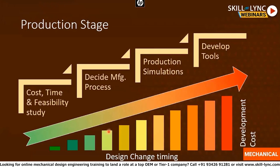One thing to consider is that when the production stage starts from the feasibility study, the development cost will be basically low. So any design change — for example, if you made a design proposal and later want to change it because it doesn't meet the component level requirement — this has to be communicated at that early stage to maintain the planned cost of development.